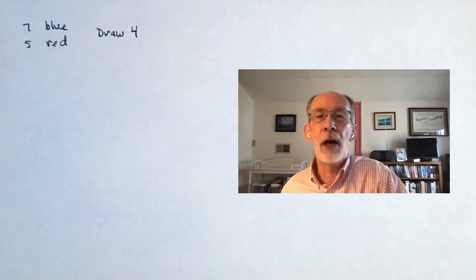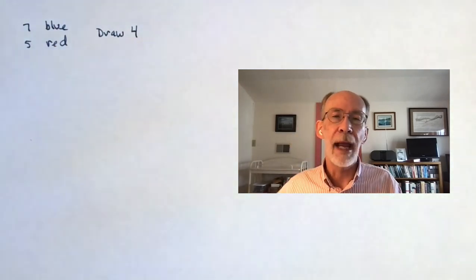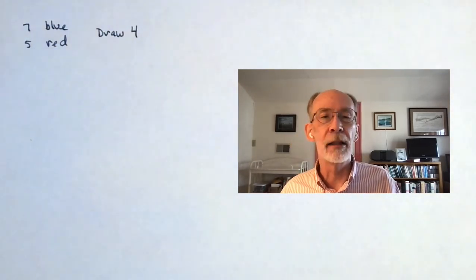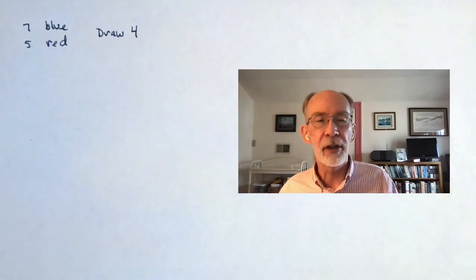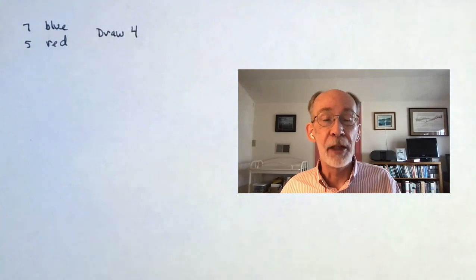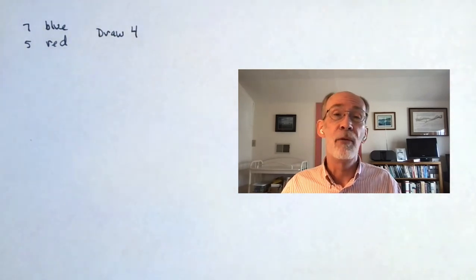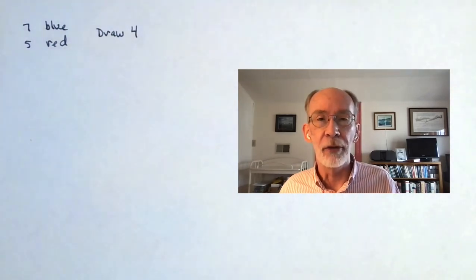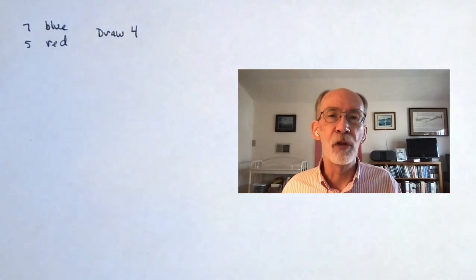This is going to depend on how we do the drawing. If we reach in, grab one, look at its color, stick it back in, mix them up, grab another one, look at its color, and do that four times in a row, that's called sampling with replacement. I sample, I replace, I sample again. If we just grab four of them all at once, in a handful, that would be sampling without replacement.